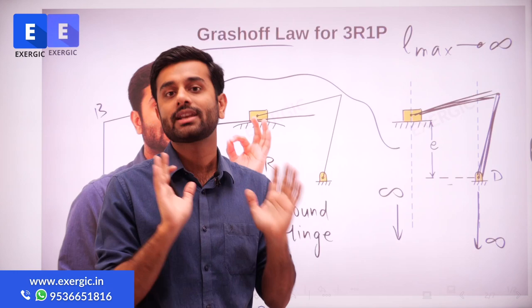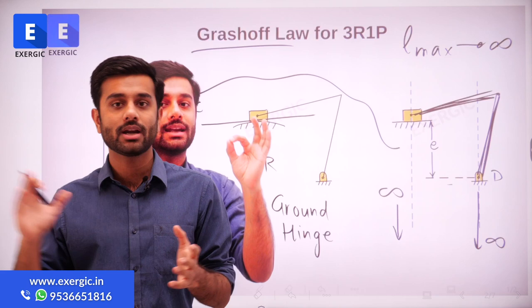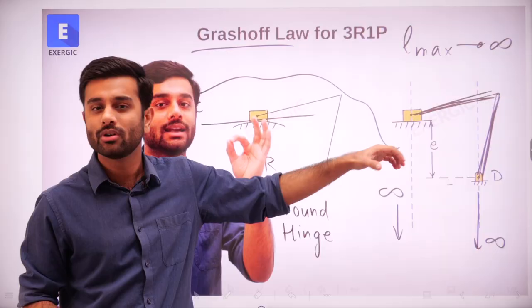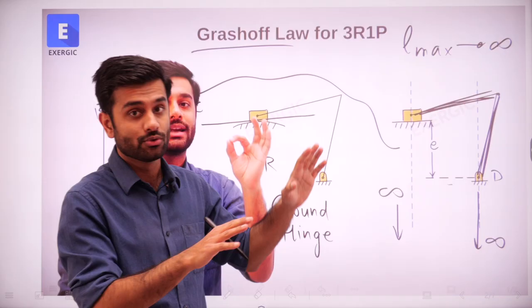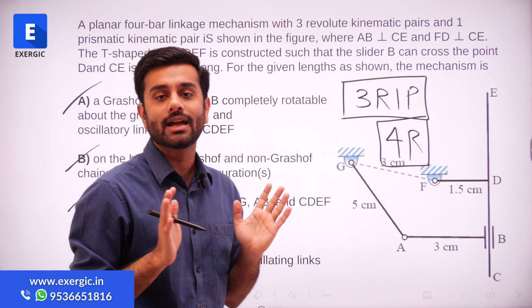Exergic students already know about this — it was in lecture number 18 of the planar mechanism unit, uploaded 2-3 months before GATE. In that lecture, we discussed the concept of the ground hinge, how we extend it to infinity, how we modify the Grashoff formula using the infinity concept and apply it. If you read 3R1P and directly use that concept, you will be able to get the answer easily.